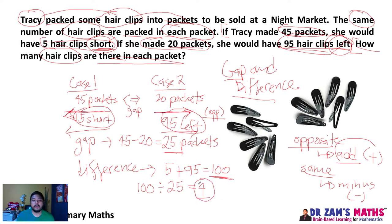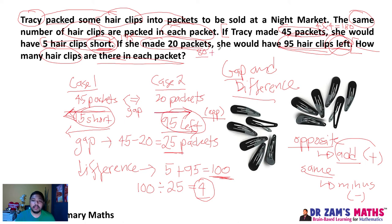Now take the difference divided by the gap: 100 divided by 25 equals 4. So there are 4 hair clips in each packet. Let's verify: 45 packets times 4 equals 180, and since she was 5 short, she actually has 175 hair clips. For 20 packets, 20 times 4 equals 80, and 80 plus 95 equals 175. Confirmed correct.